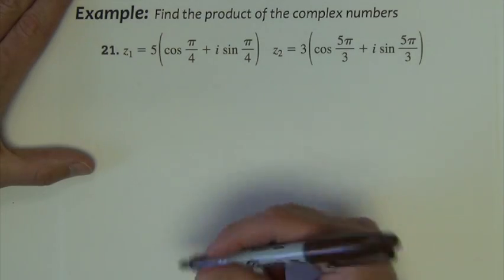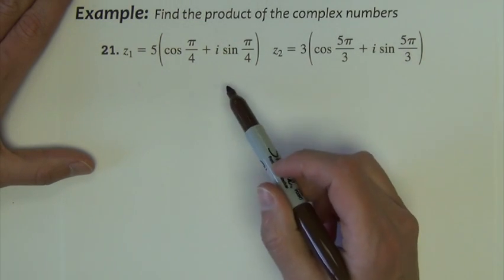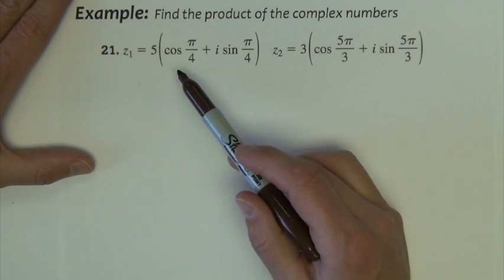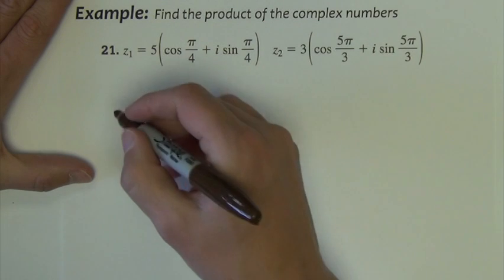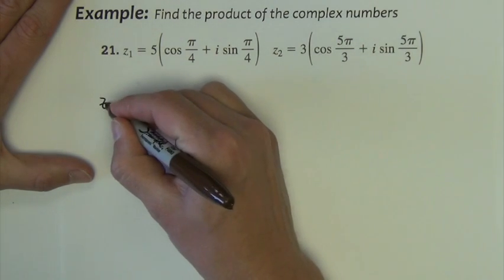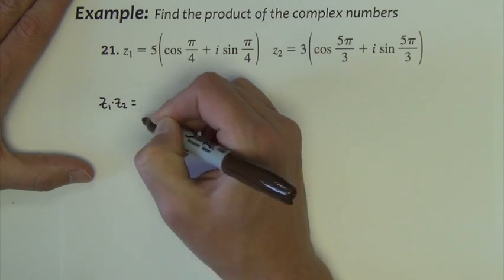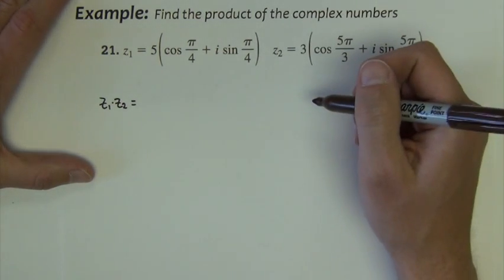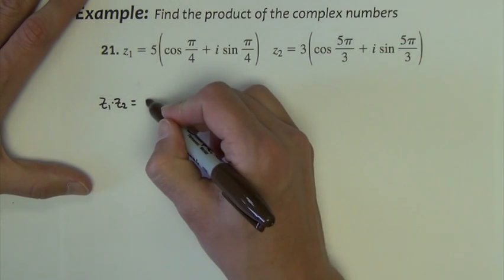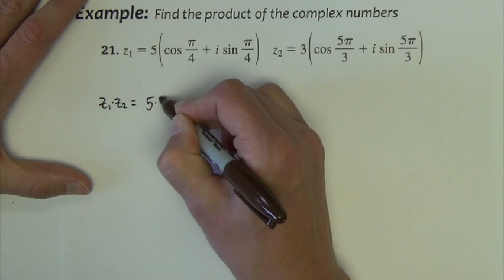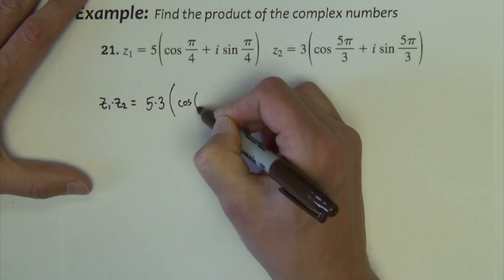There are our formulas for multiplying and dividing complex numbers in trigonometric form. This example asks us to find the product of two complex numbers. Clearly these are in trigonometric form — the giveaway is that you've got sines and cosines involved. So we're asked to find Z1 times Z2. We're going to do it the way the last slide showed us, beginning by multiplying the R values, and then we're going to add the thetas.